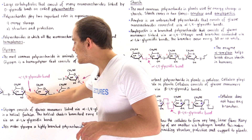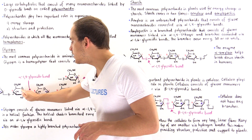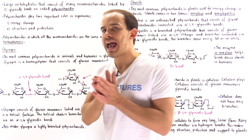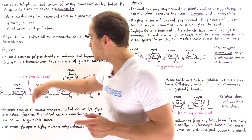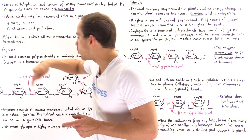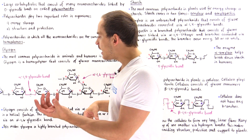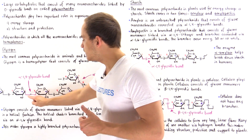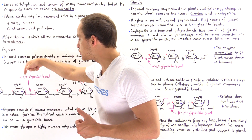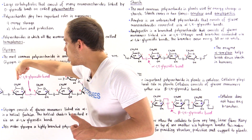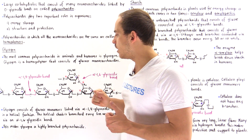If we examine the stereochemistry of carbon number one, this will have an alpha arrangement of atoms, which means we'll have an alpha-1,4 glycosidic bond. The alpha anomer means that this bond points in the opposite direction — downward — with respect to the adjacent bond which points upward.